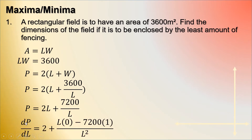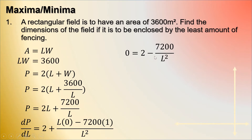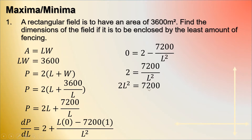Differentiating the perimeter with respect to L: using the quotient rule, that is L times 0 (the derivative of the numerator) minus 7,200 times the derivative of the denominator, which is 1, over L squared. Simplifying and setting dP/dL equal to 0, we get 0 equals 2 minus 7,200 over L squared. Transferring 2 to the other side and cross-multiplying: 2L squared equals 7,200, so L squared equals 3,600.